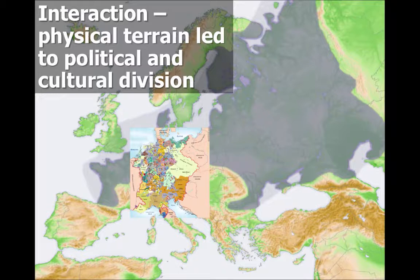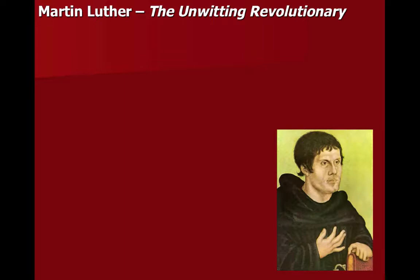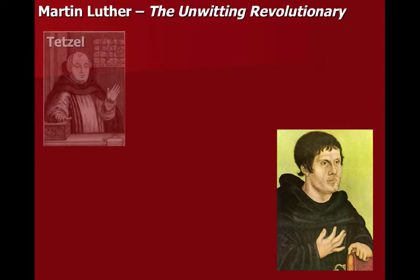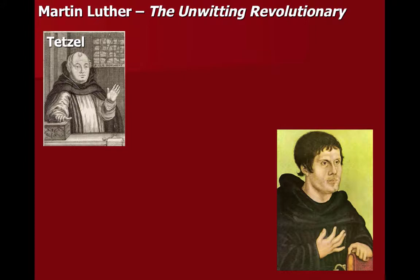Now, in any good story you need a protagonist. Enter Martin Luther, who could be seen as the unwitting revolutionary, because he did not intend to begin one of the most radically momentous time periods in European history. He merely intended to reform some Catholic practices that were not supported by his readings of the Bible. The antagonist of this story was Johann Tetzel, a Catholic priest who was selling indulgences, or pardons for sin. Luther was appalled by this.